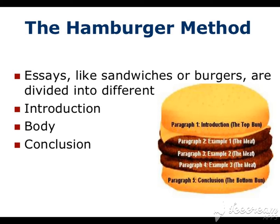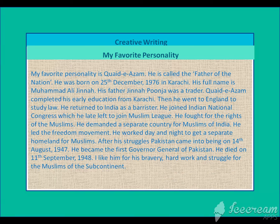If you want a summary of how to write an essay, think of it like a hamburger. An essay, like a sandwich or burger, is divided into different layers: the introduction is the top, the body can be paragraphs one, two, three, or four in the middle, and the conclusion is the last bottom part where you summarize your whole essay.